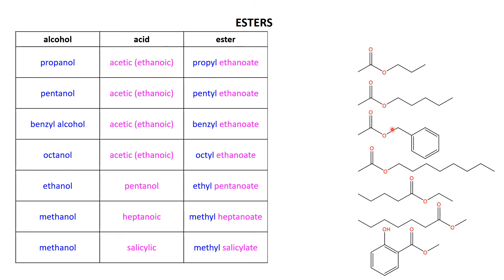Benzyl alcohol — that's the benzyl group there, if you remember, a benzene ring with a CH2. For octanol to give octalethanoate, that's the ethanoate part, and then 1, 2, 3, 4, 5, 6, 7, 8 carbons of the original octanol moiety there.